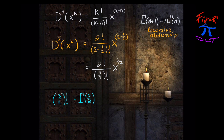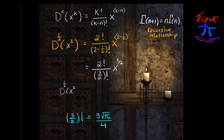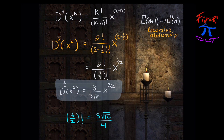Three-halves factorial is the same thing as gamma of five-halves. By the recursive relationship, that's three-halves times gamma of three-halves. The gamma of three-halves is √π over 2, so we get 3√π over 4. So the half derivative of x squared, putting this together with two-factorial, is 8 over (3√π) times x to the 3/2 power.